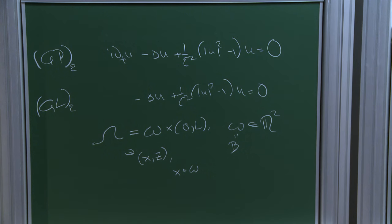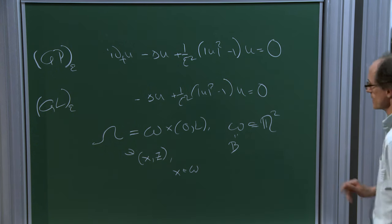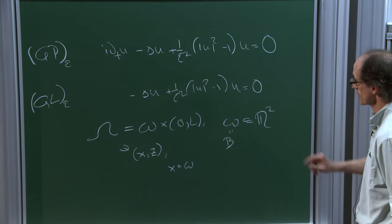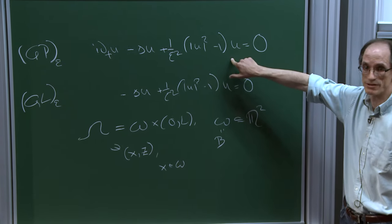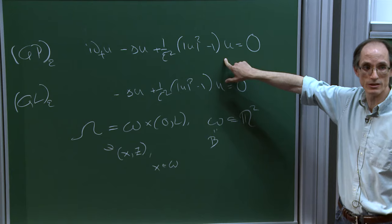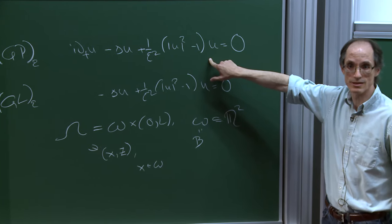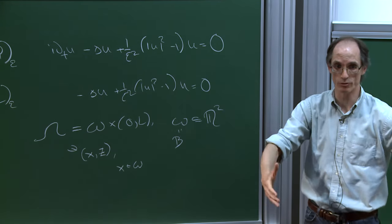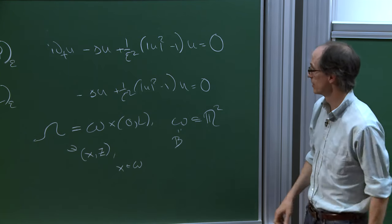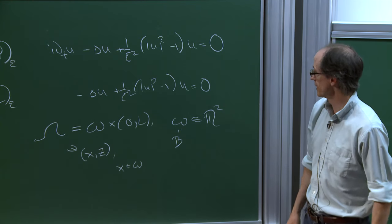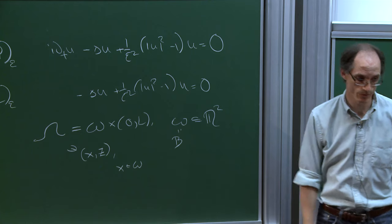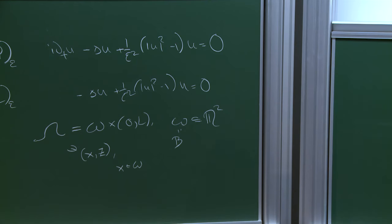So these are my equations. For concreteness, I'll consider, for example — this is the more interesting one — Neumann boundary conditions on the lateral boundary and periodic in the z direction. And here I would want probably some Dirichlet data somewhere.